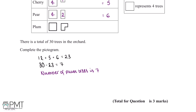This question is worth three marks. We get one mark for working out the total number of trees already represented in the pictogram, a second mark for subtracting this from thirty to work out the number of plum trees, and a third mark for correctly completing the pictogram.